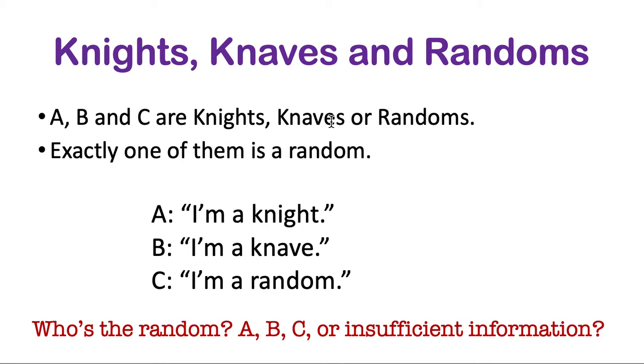Remember, the disjunction here is a three-way disjunction. We're not just talking about knights or knaves anymore. We're talking about knights, knaves, and randoms. Each person is one of those three things. Okay, last chance to pause your videos. I'm going to talk about the solution now.